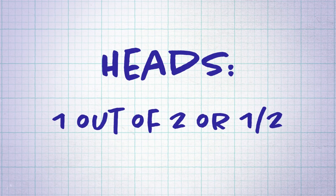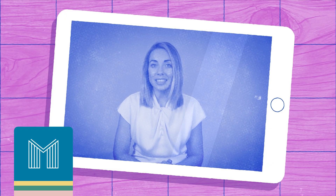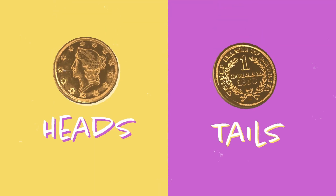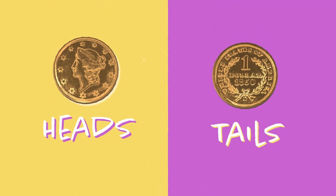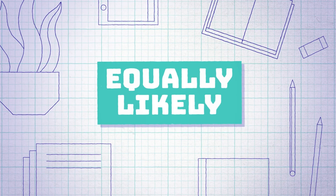This means the chance of flipping heads is one out of two — a half. It's not always that easy. Let's imagine we're flipping two coins. What's the probability of each outcome? We need to figure out how many outcomes are possible and then whether they are equally likely.